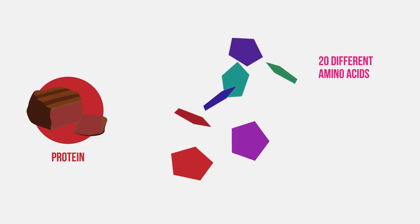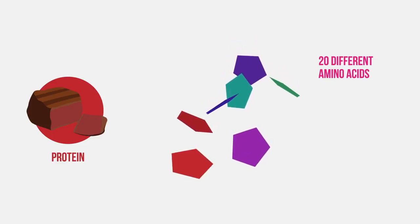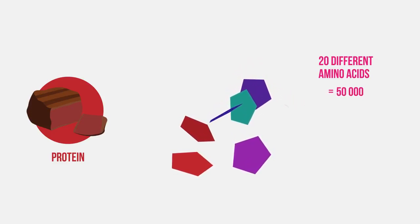The order of amino acids varies in different proteins, and so 20 different amino acids means an almost infinite number of different proteins can be made. It is estimated that there are about 50,000 different proteins in the human body alone.